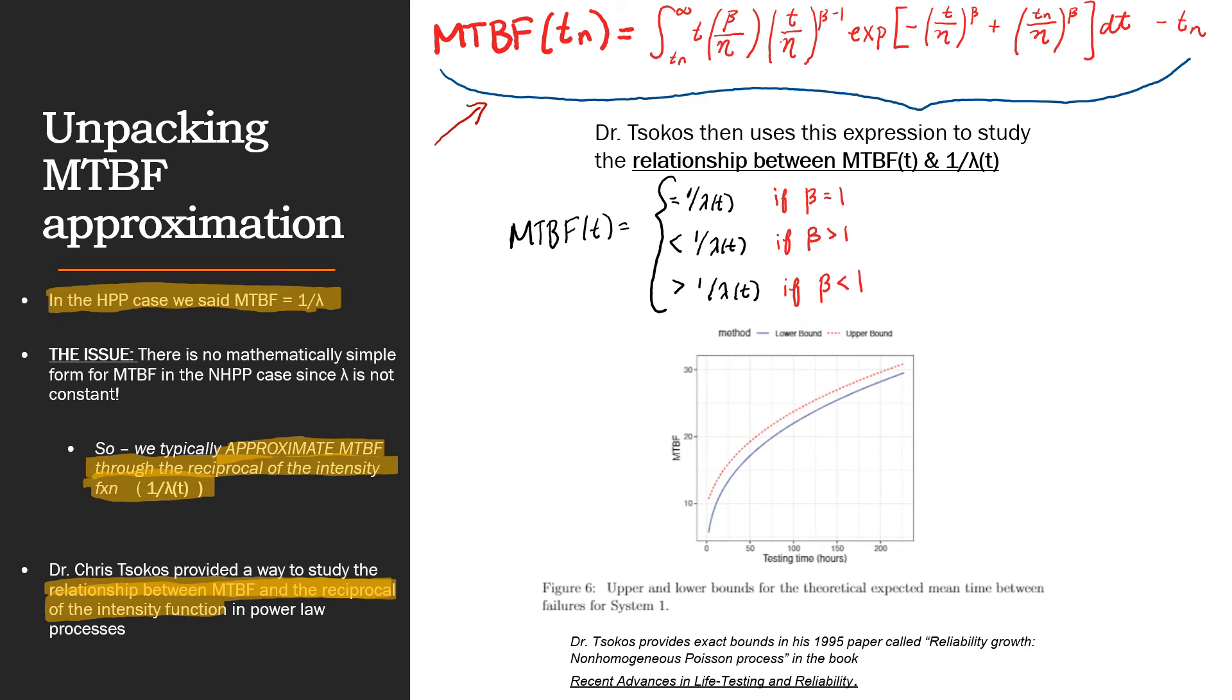Now, when β is less than 1, MTBF is greater than the approximated MTBF. And lastly, when β is greater than 1, MTBF is less than the approximated MTBF, 1 over the intensity function. Now, note that in this first case, where we have β equals 1, we're living in the space where the HPP exists. Because in this case, when β equals 1, the intensity function, λ(t), equals λ.